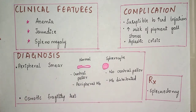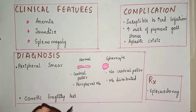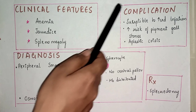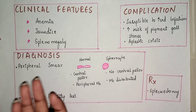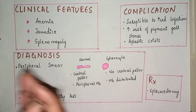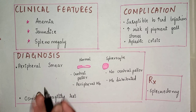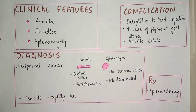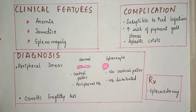Some complications include susceptibility to increased infections. The main treatment in hereditary spherocytosis is splenectomy. If there is no spleen, there is no hemolysis of the RBCs. However, without a spleen, the patient is prone to more parvovirus infections and is susceptible to increased infections overall. There is also an increased risk of pigment gallstones and aplastic crisis. Treatment is mainly splenectomy.